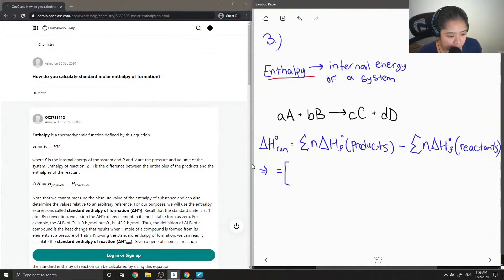So for example, this would be lowercase c times the delta H of formation for compound C plus lowercase d times the delta H of formation for compound D. So this represents the first factor of our equation.